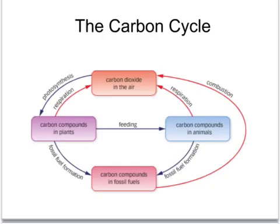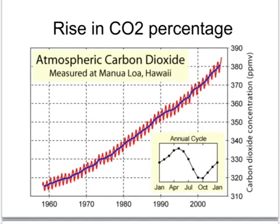A third process which affects the carbon dioxide in the air is combustion of fuels. This puts carbon dioxide into the air and is one of the reasons why, as you can see on the next slide, there is a rise in carbon dioxide percentage — from around 0.03% in 1960 up to nearly 0.04% in 2010. We're expected to remember that the percentage of carbon dioxide in the air is around about 0.035%.